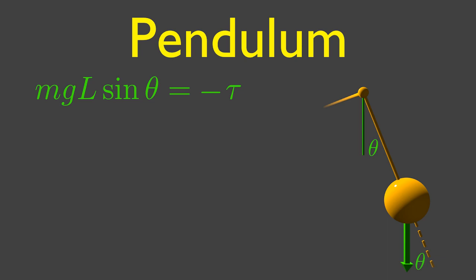At any angle theta, we can compute the torque on the pendulum due to gravity. It's just the force, mg, times the length of the pendulum times the sine of the angle. We need a negative sine, since this torque is always opposite the direction of increasing theta.